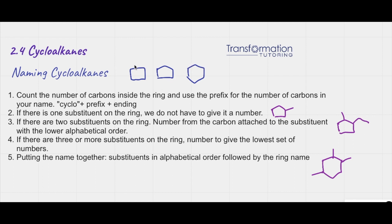Next, once we've figured out the parent name, if there is one substituent on the ring we do not have to give it a number — we just have to name it. So for example, my ring here has five carbons so it is cyclopentane. I have one substituent which contains one carbon only, and this is called methyl. So all I have to say is methylcyclopentane. That's the name.